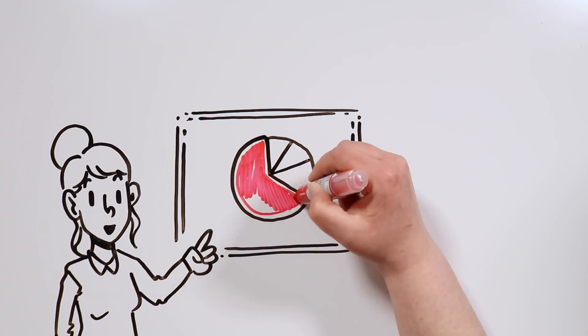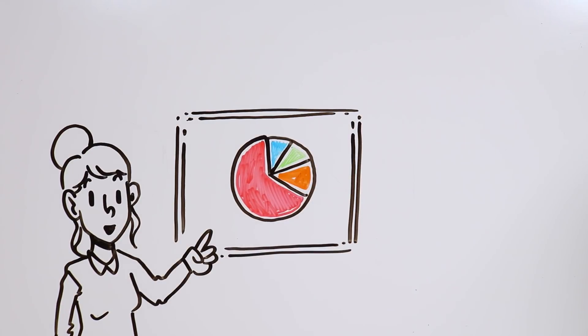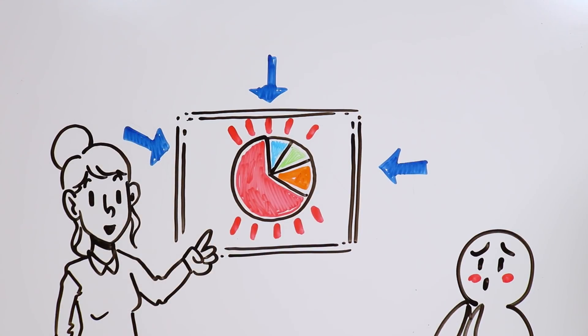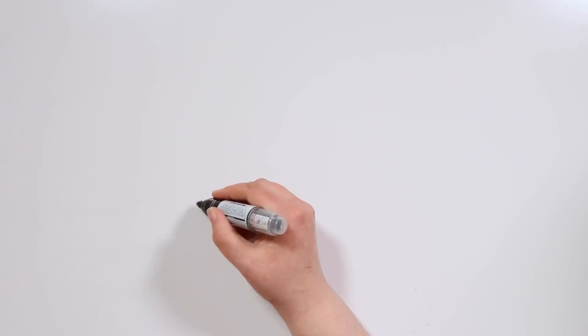Now imagine that you're in the middle of a class, and the teacher starts explaining something using a graph or a map. If they are divided by colors, and you were colorblind, that could be very confusing for you.